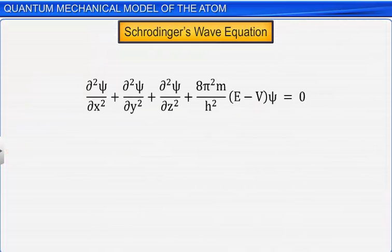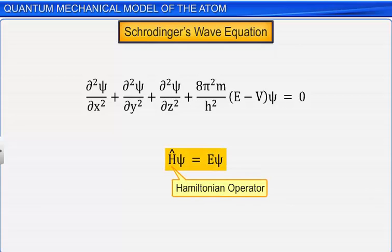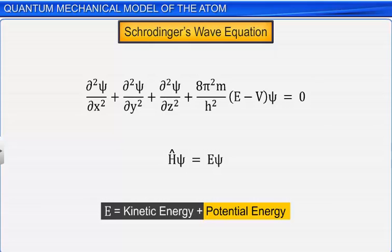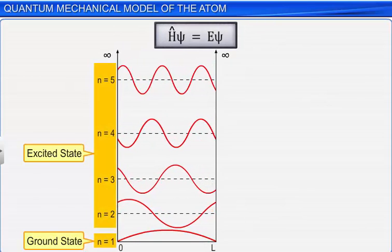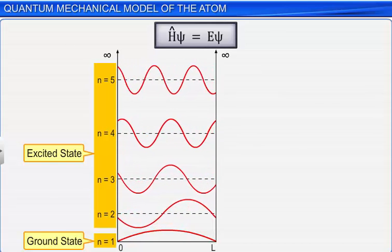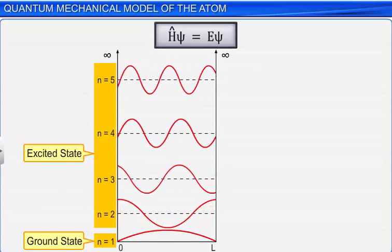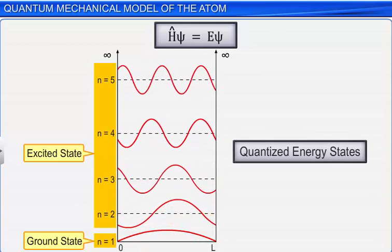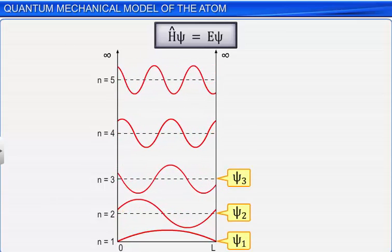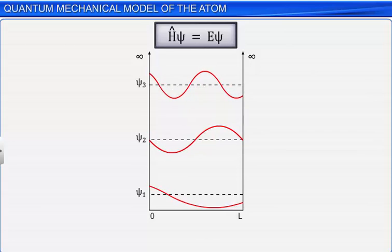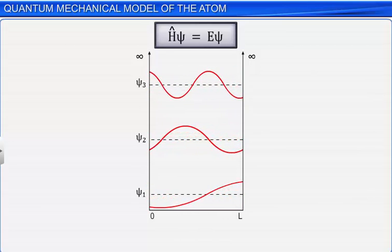In short, Schrödinger wave equation is written in terms of the Hamiltonian operator. In this equation, E stands for total energy of the system, which includes kinetic energies of all the subatomic particles and potential energy due to attractive and repulsive forces operating in an atom. When Schrödinger wave equation is solved for an electron of an atom, such as hydrogen atom, it gives the values of the possible energy levels in which the electron can move, called quantized energy states, as well as the wave functions corresponding to these energy levels. Note that in quantum mechanics, all the properties of a system are expressed in terms of a wave function, obtained by solving the Schrödinger equation.